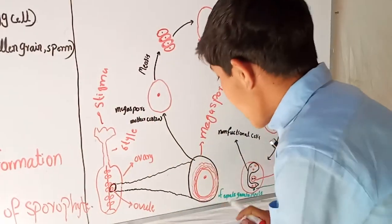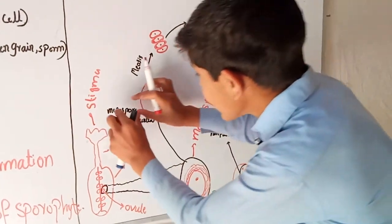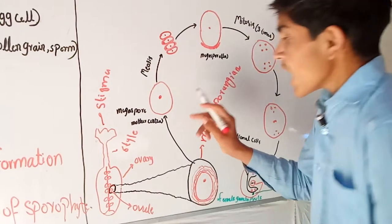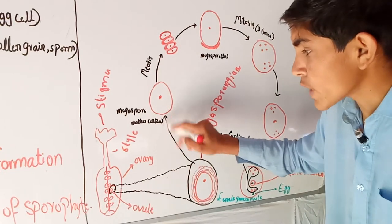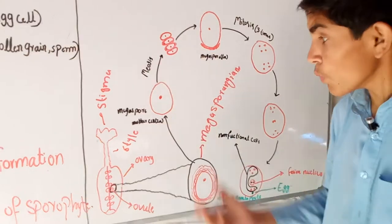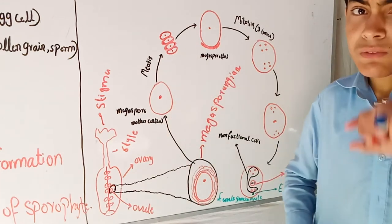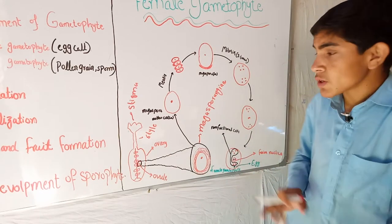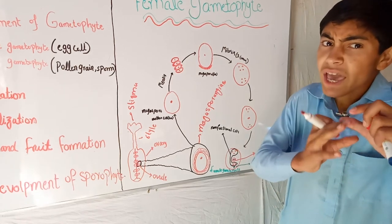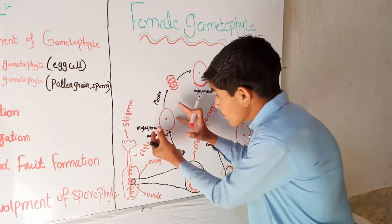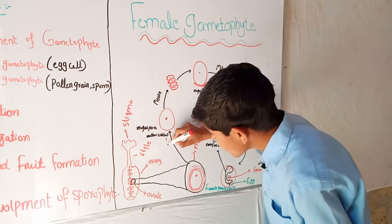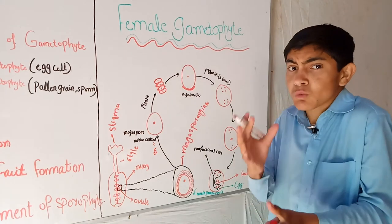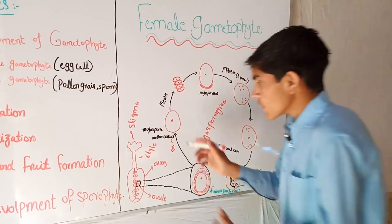The ovule contains the megasporangium. When we take one cell from it, we call it the megaspore — also called the mother cell, because the mother is female. The mother cell is diploid in chromosomes: if the plant has four chromosomes, the mother cell also has four chromosomes. There is no reduction of chromosomes, so the mother cell is 2n — it is a diploid cell because it contains double the chromosomes.